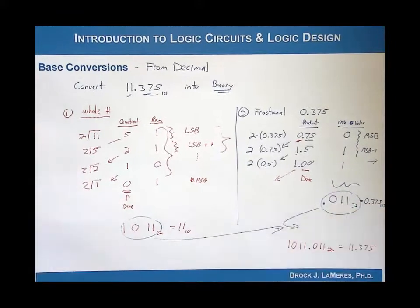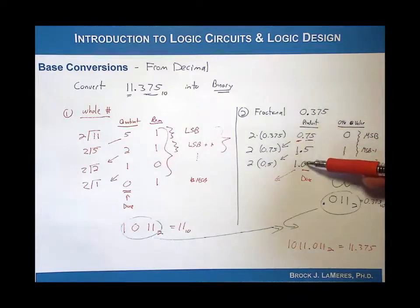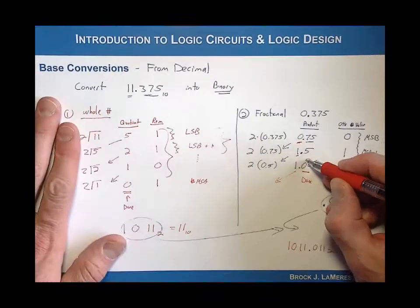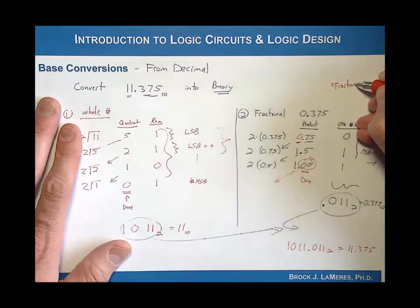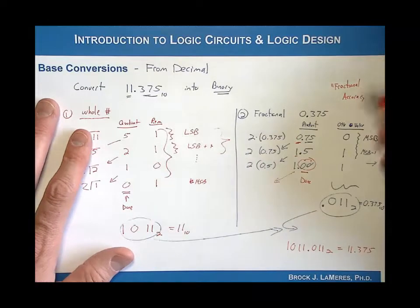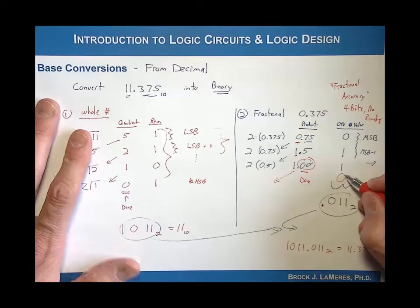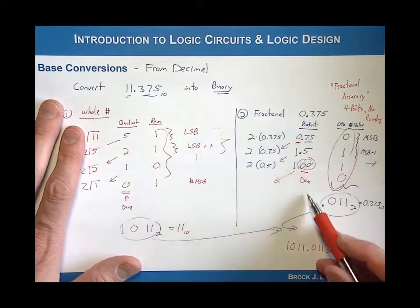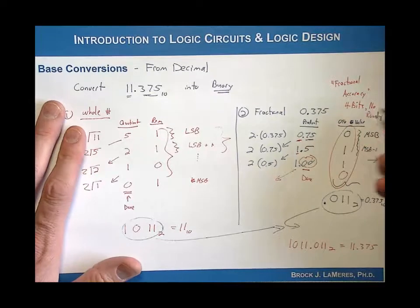When you convert from decimal into binary, one of the things that can happen is if you have irrational numbers, the product here can go indefinitely. You can be in a situation where you continue and continue and never reach this ending point of 0.00 as the fraction. So one of the things you can do is specify what we call fractional accuracy. Someone might state that they want you to convert decimal into binary with four bits of fractional accuracy and perhaps no rounding, meaning you go until you get four bits and then stop.